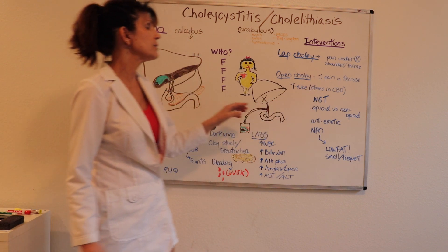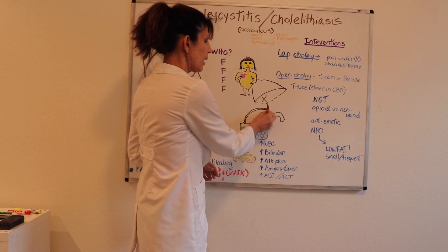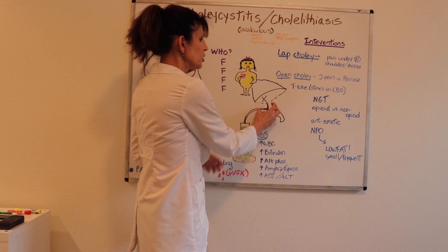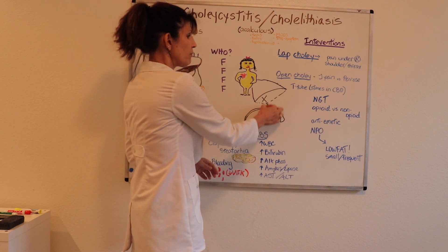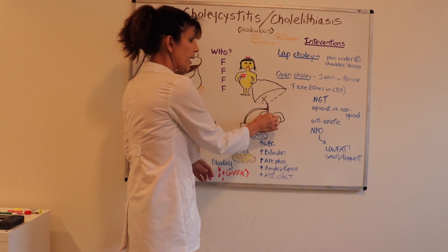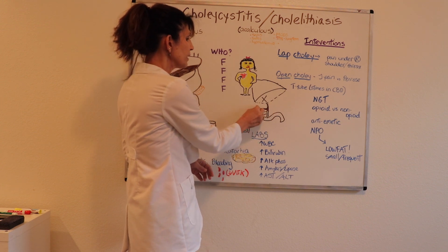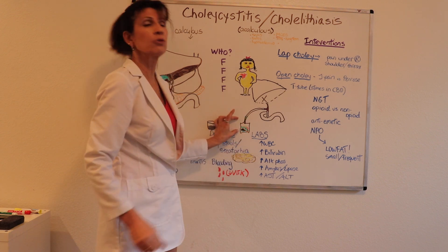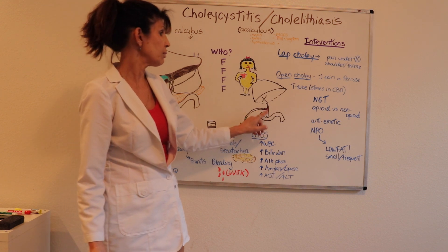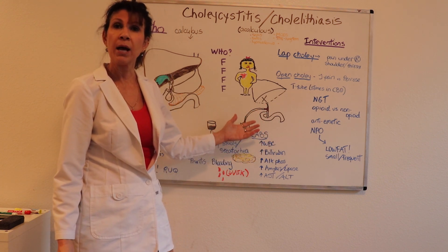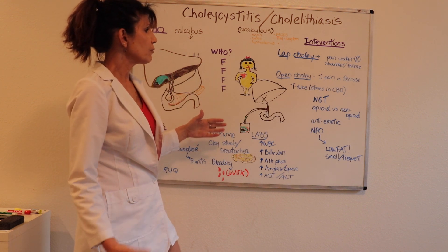When the gallbladder is taken out and there are CBD stones, they place a T-shaped device in the common bile duct to keep it open. This allows some bile from the liver to drain directly into the duodenum, while some drains out into the drainage bag — maintaining patency of the common bile duct postoperatively until the edema subsides.